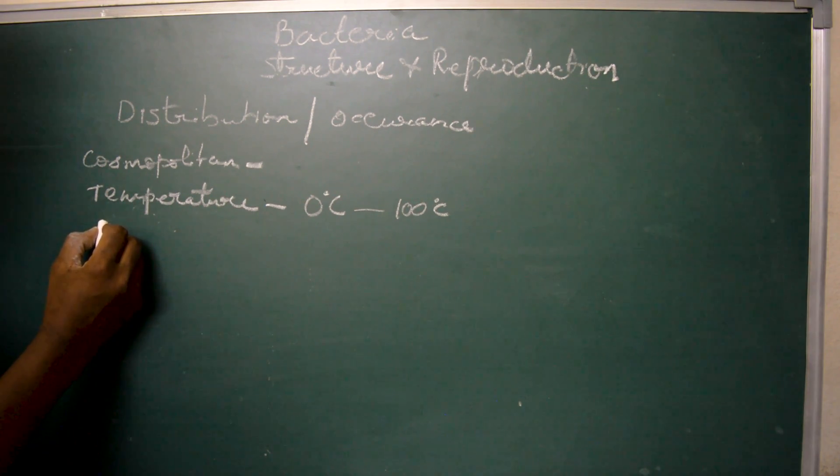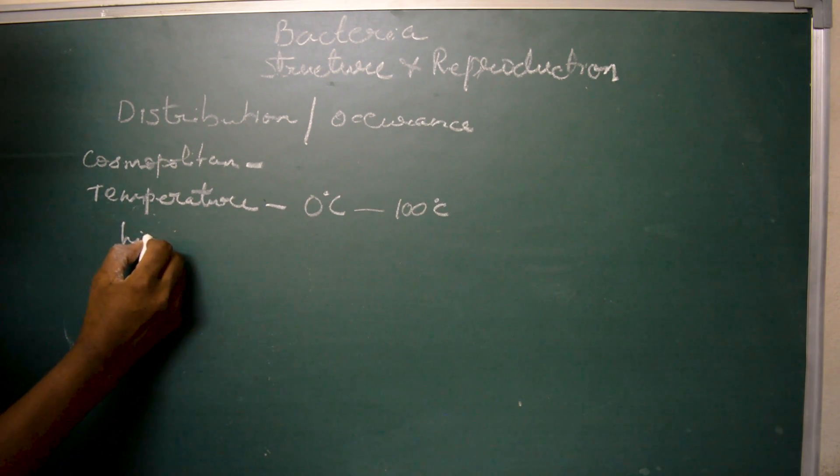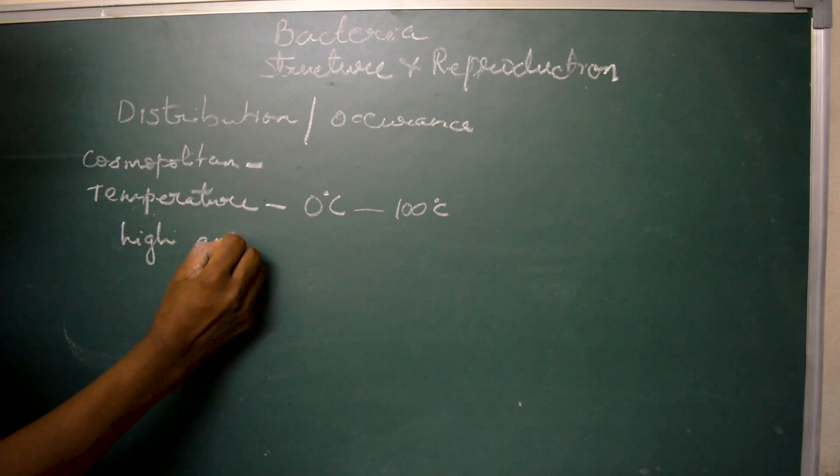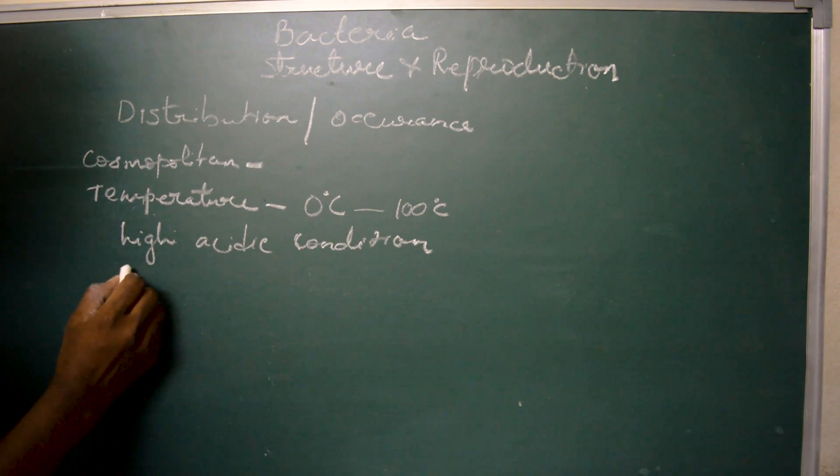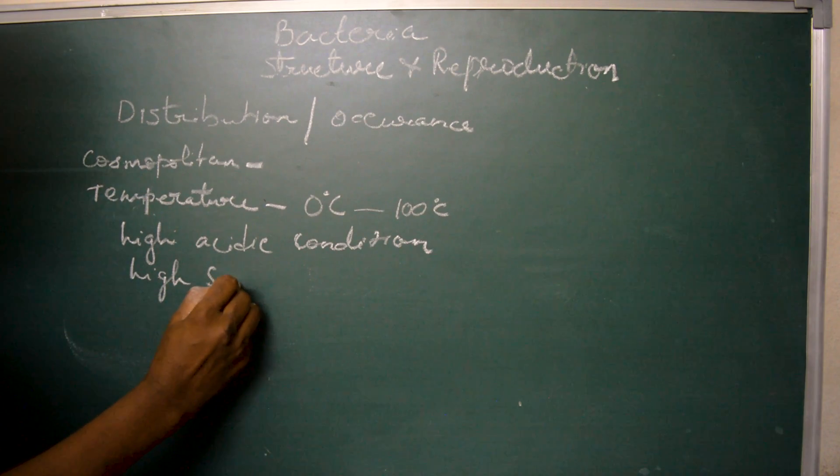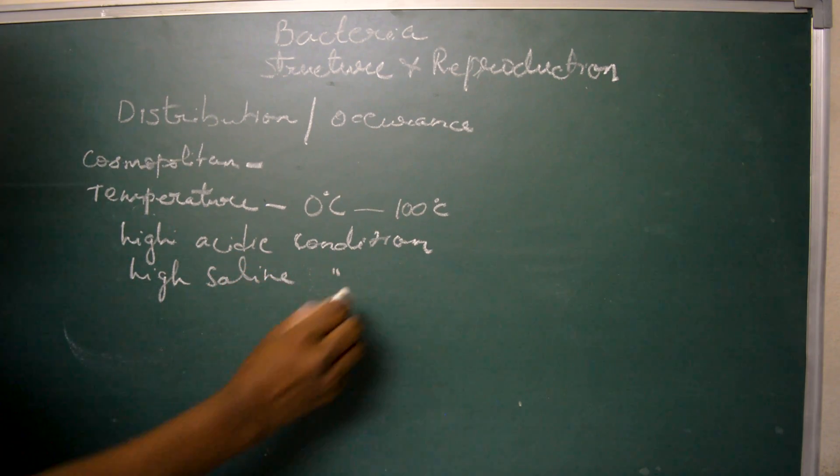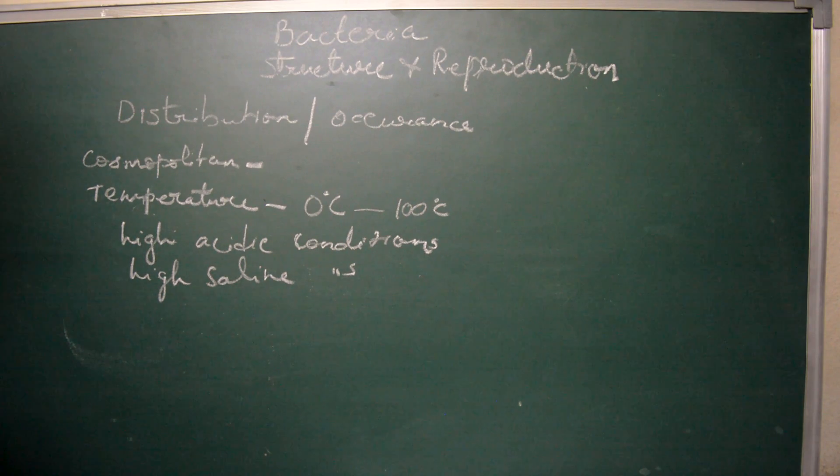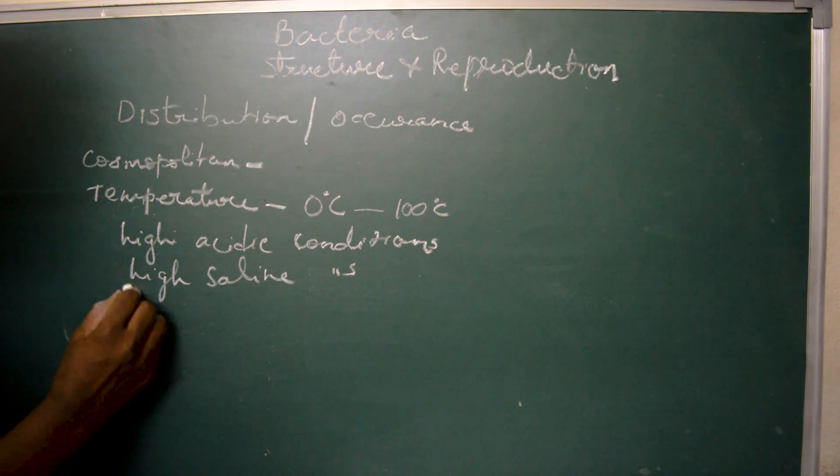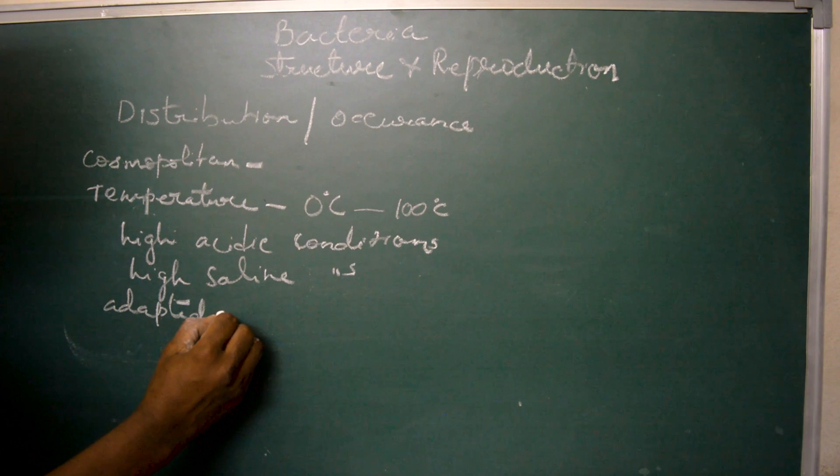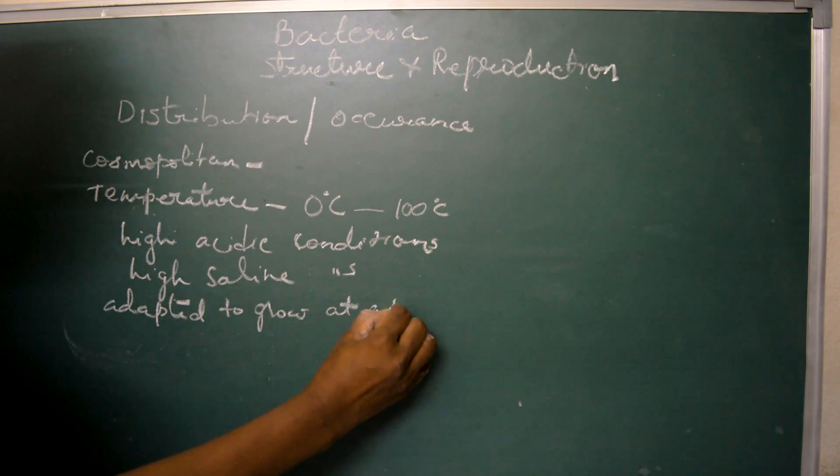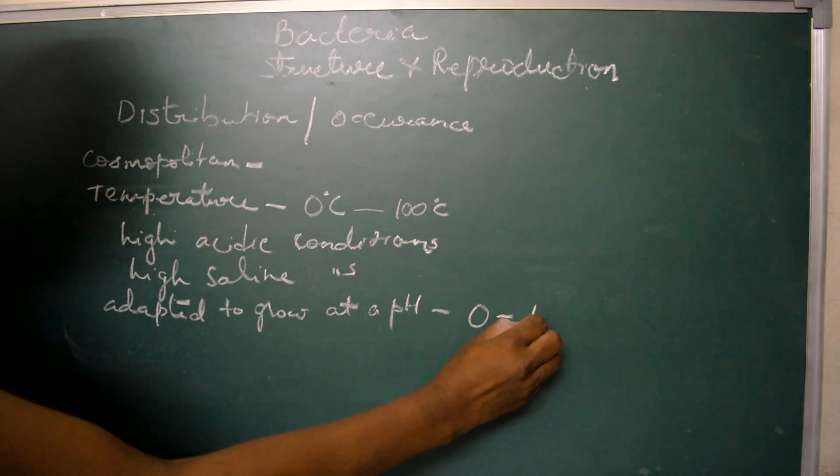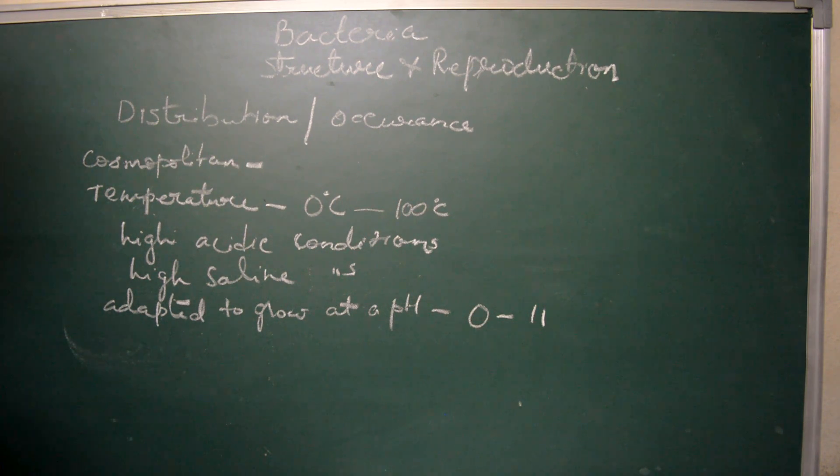They withstand high acidic conditions and high saline conditions. They are adapted to grow at a pH which ranges from 0 to 11, that is they can grow in highly acidic soils or grow in alkaline conditions also.